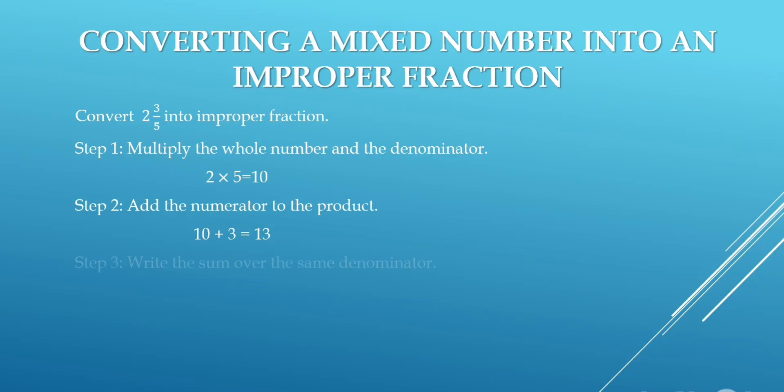Step 3: write the sum over the same denominator. Denominator is 5 and the sum is 13, so the answer is 13 upon 5. The improper fraction is 13 upon 5.